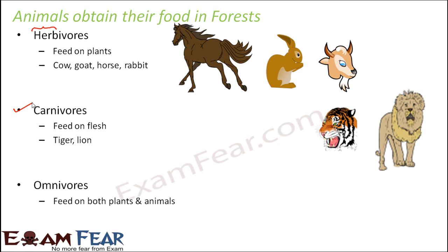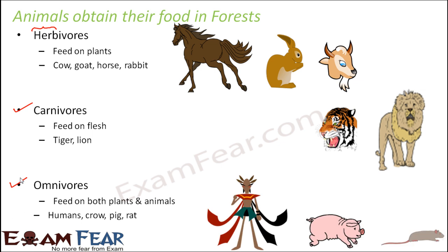There is a third type of animals which are more flexible — they can feed on both plants and animals. These are called omnivores. Examples include humans, crow, pig, and rat. A lot of human beings, mostly tribal people, also live inside the forest. These tribal people are so used to living in forests that they earn their livelihood from the forest — depending on fruits and vegetables from the forest. They also know how to handle animals and protect themselves from carnivores, so they are completely adapted to living inside the forest. Animals like crow, pig, and rat are also omnivores.